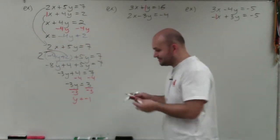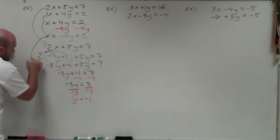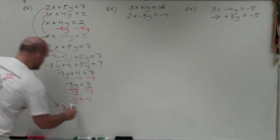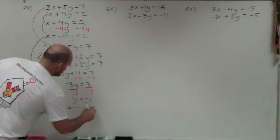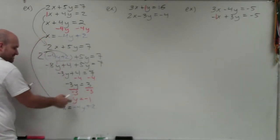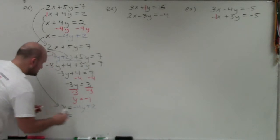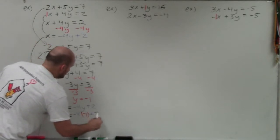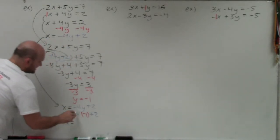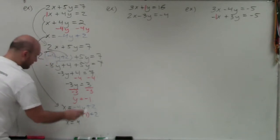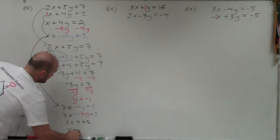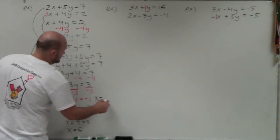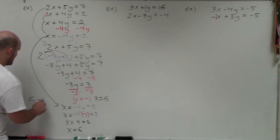Now I need to find the value of x. Since y is solved, I go back to x equals negative 4y plus 2 and plug in negative 1 for y. So x equals negative 4 times negative 1 plus 2. Negative 4 times negative 1 is positive 4, plus 2 gives x equals 6. The solution is y equals negative 1 and x equals 6, or as a coordinate point, (6, −1).